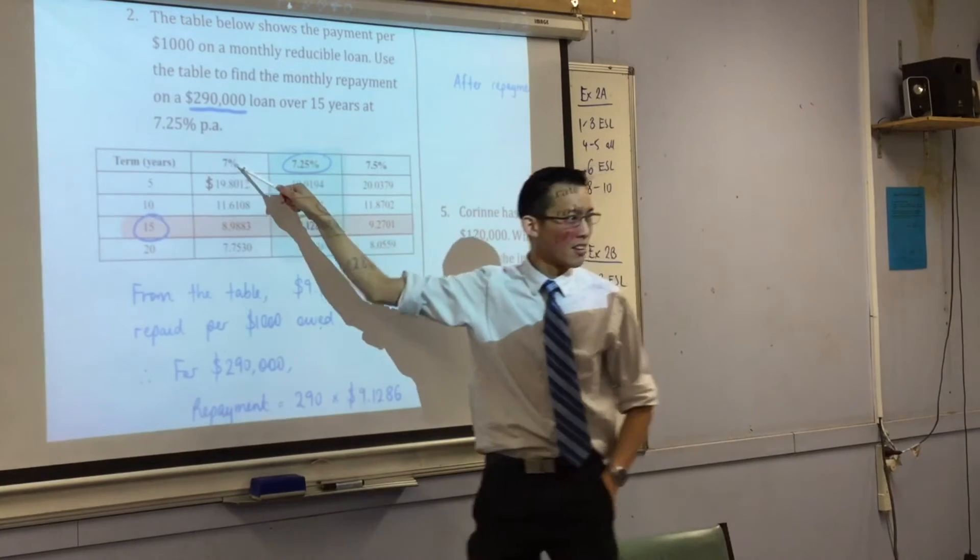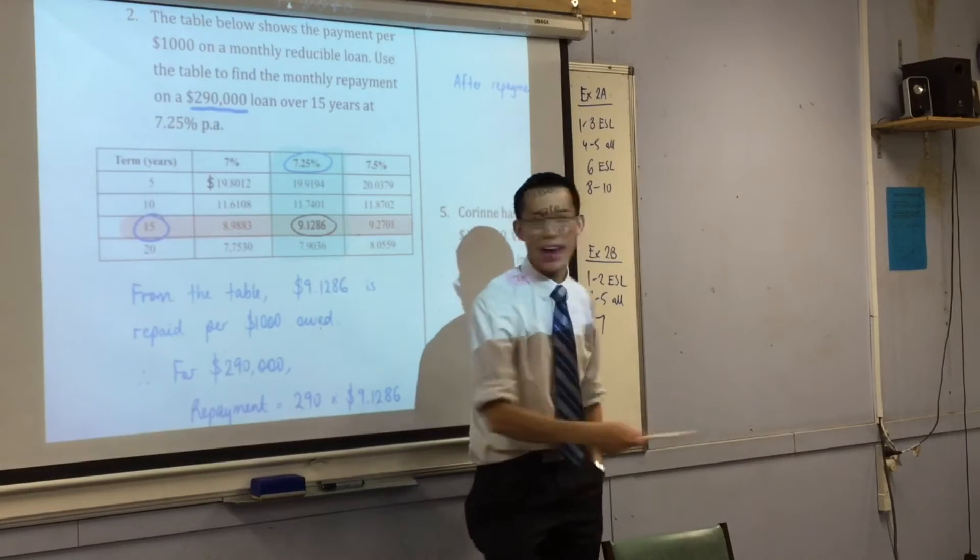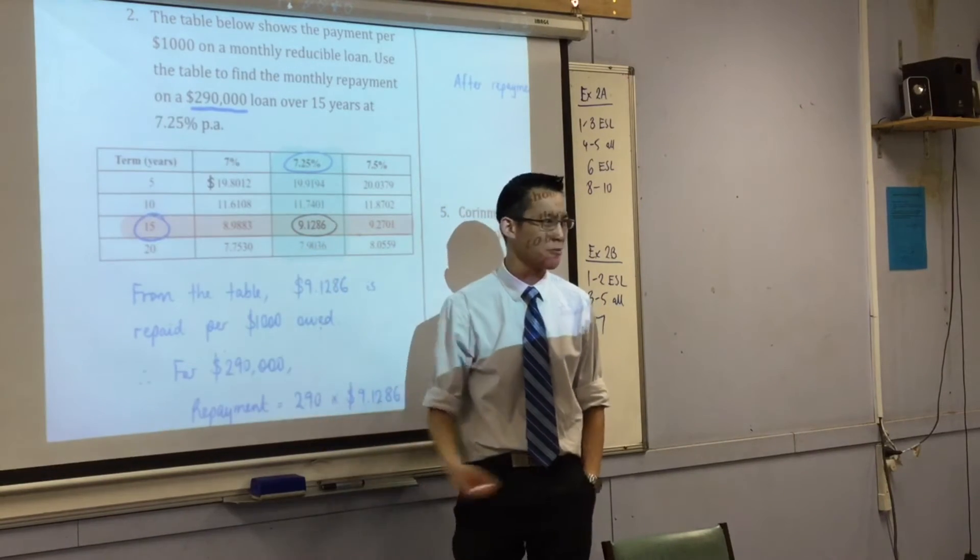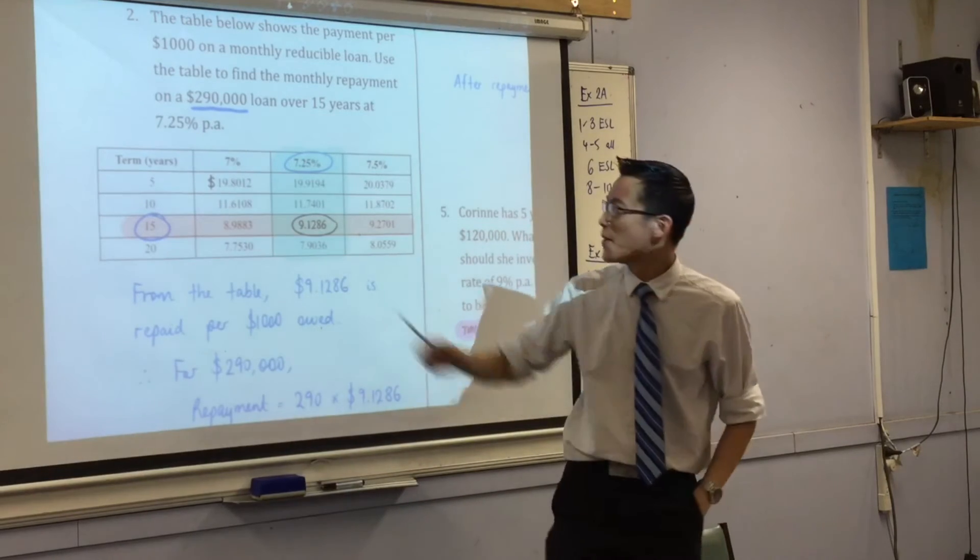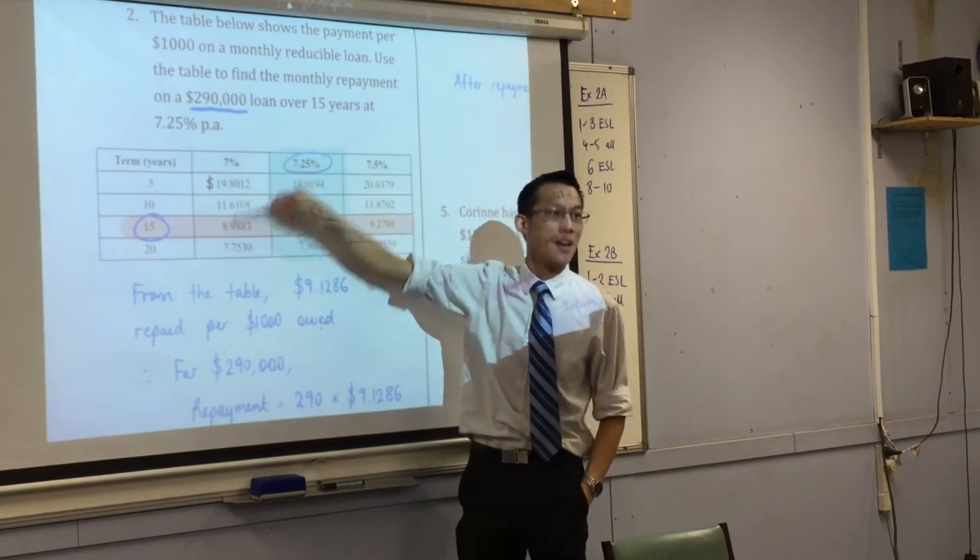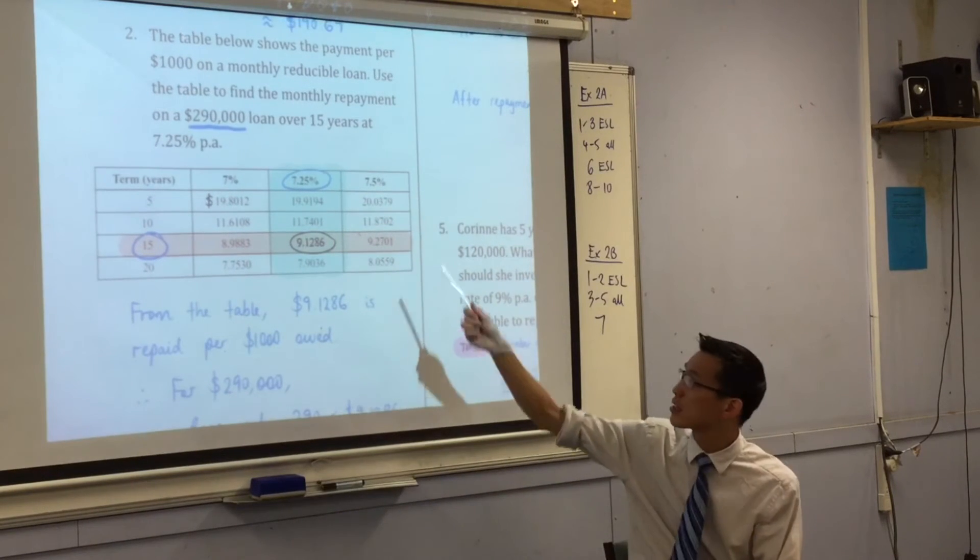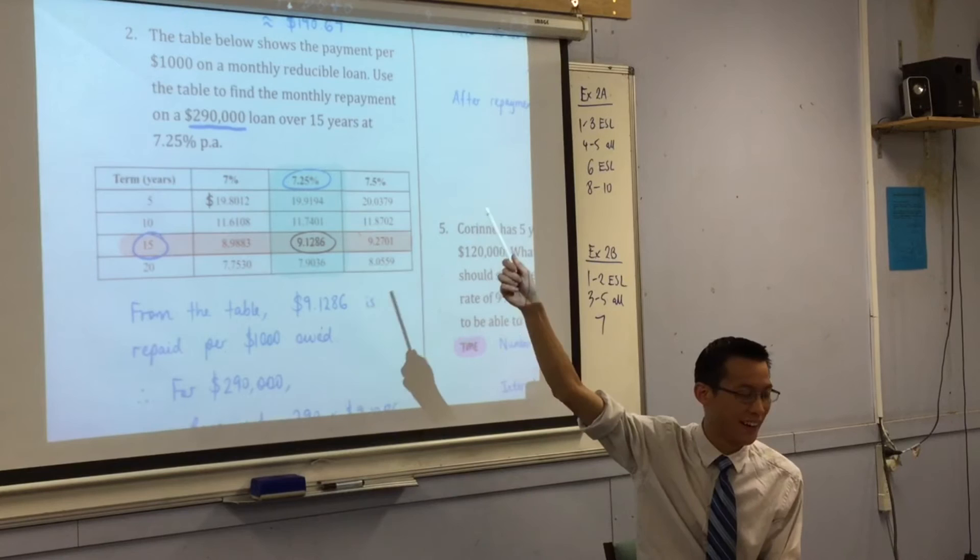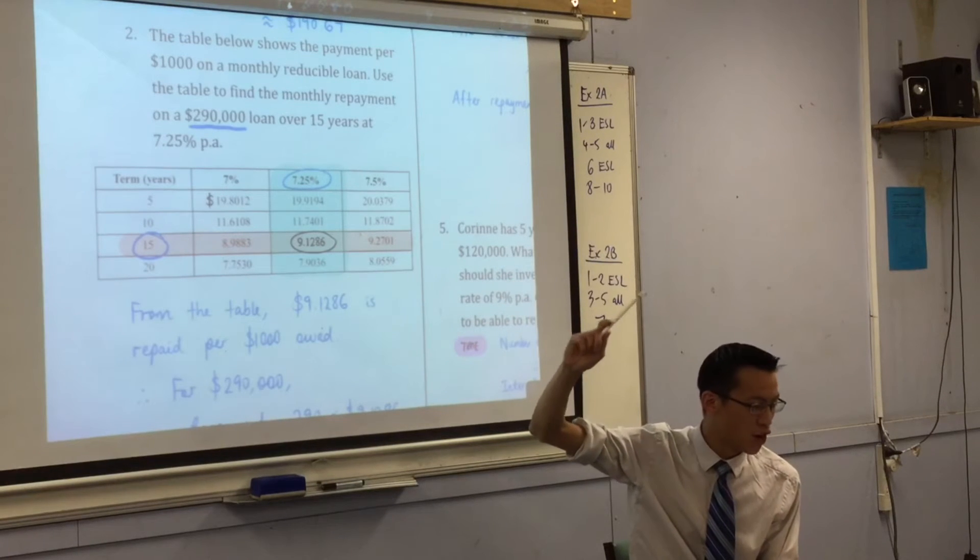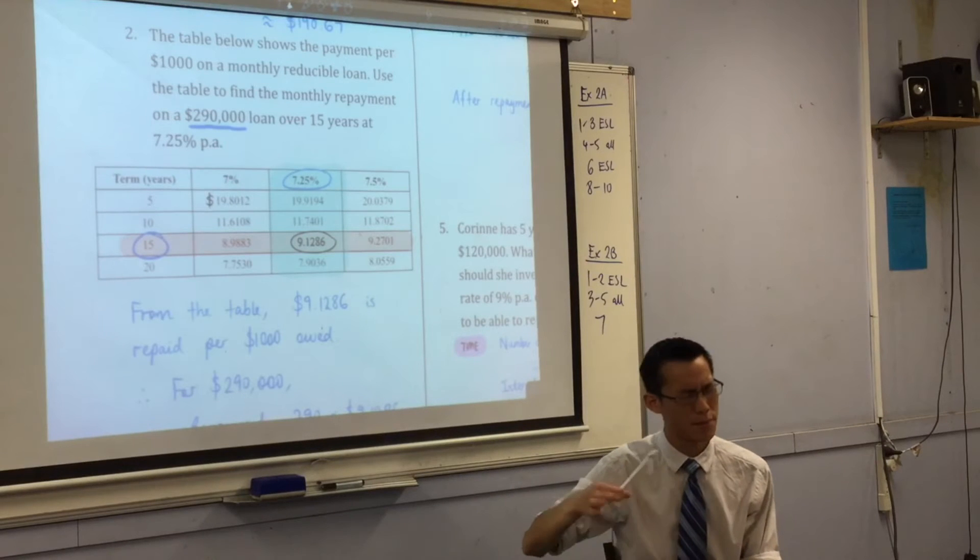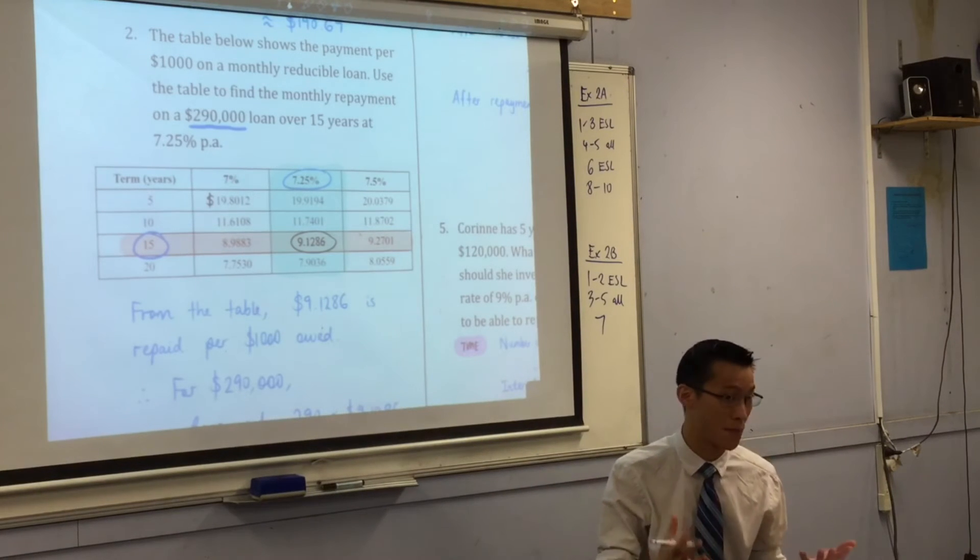That's a percentage, right? Like it wouldn't really make sense to say, oh, 7% will be 19.8%. Which one is it? Okay, so the fact that this is a percentage tells you this is not a percentage. And then secondly, just come back to the first sentence in the question. It says, the table below shows the payment per $1,000. Payment per $1,000. So that's going to be a dollar amount.